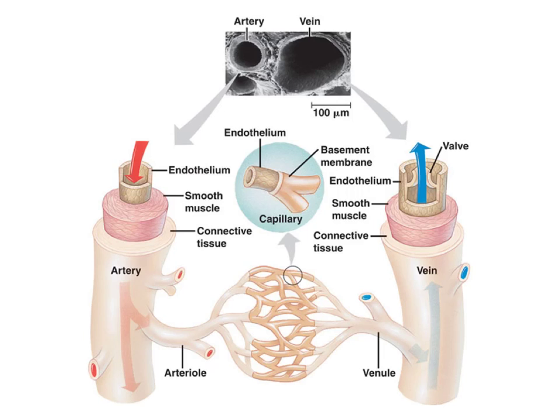The blood comes out of the heart under pressure. Every time the ventricles contract and the heart pumps more blood into the system, the pressure that the blood exerts on the walls of the vessels goes up. So one of the things you'll see in arteries is that they're well equipped to deal with excess blood pressure, and the way they do that is through this layer of smooth muscle tissue. The smooth muscle tissue allows some control of blood pressure.